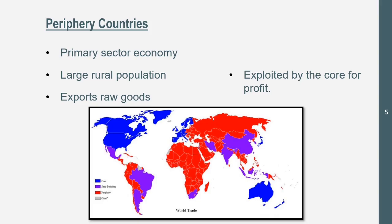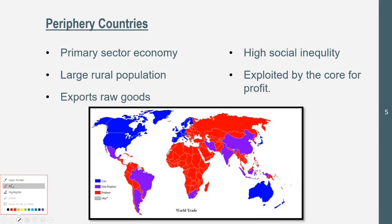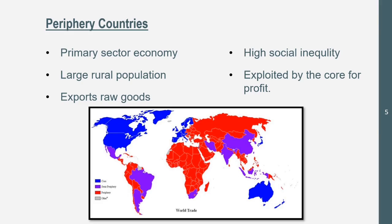Periphery countries are the ones being exploited. They also have high social inequality. This isn't always the case — Libya, for instance, has a gender inequality index score comparable to the United States or Australia. But primarily, periphery countries tend to favor men more, as they're more traditional and haven't yet developed women's education and employment opportunities. Reproductive health is also not a main focus in these countries.